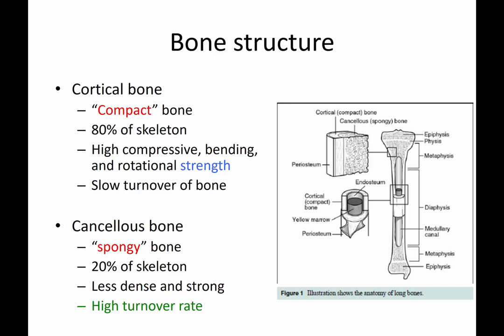A few notes about bone structure. The easiest way to break it down is cortical bone and cancellous bone. Cortical bone is compact bone — it represents 80% of the skeleton by weight, with very high compressive, bending, and rotational strength, and a relatively slow turnover rate. So a fracture through cortical bone takes a little longer to heal relative to cancellous bone. Cancellous bone is spongy bone — by weight it's 20% of the skeleton, less dense and strong, with a high turnover rate, so fractures through cancellous bone typically heal much faster.